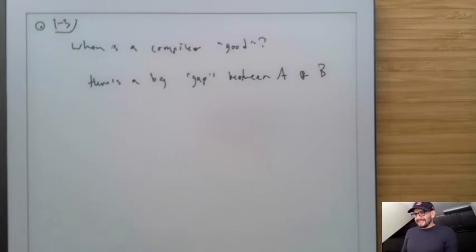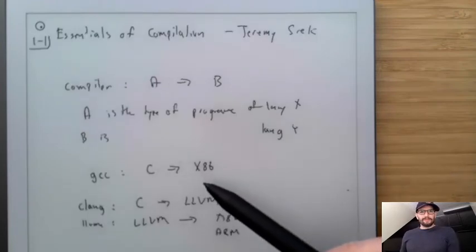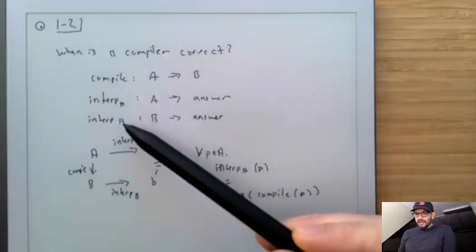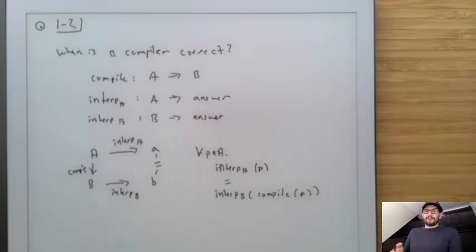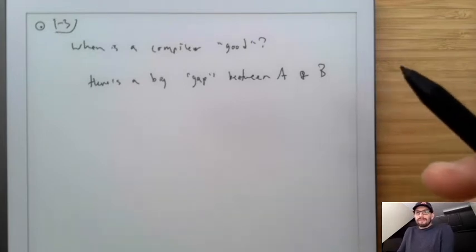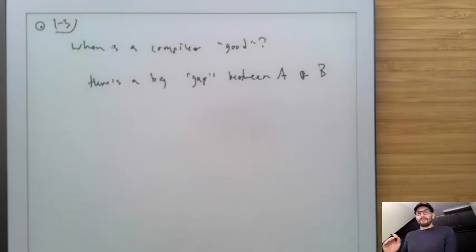Think about your X86 program — that's what you want to run because you have sitting in front of you an interpreter for X86, which is your CPU. If you have one of these fancy new Macs, you have an interpreter for ARM64. So you have an interpreter for the B language and you really want to run programs, but you don't want to write programs in it. You want to write A programs and run A programs. The gap is the gap between what you have and what you need.